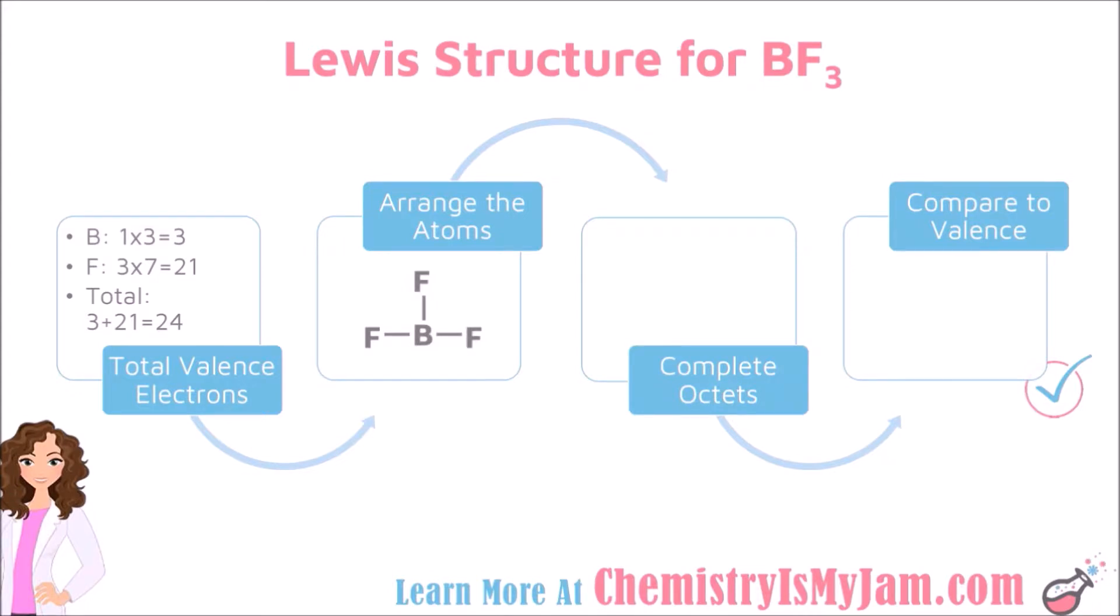The next step is to arrange the atoms with the least prevalent atom in the middle. There is 1 boron and 3 fluorines. Boron should go in the middle with a single bond to each of the 3 fluorines.